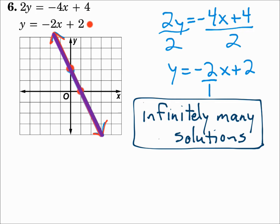When you have a system of equations and you're graphing them, you graph the two lines. If they intersect at one point, there's one solution — consistent independent. If they overlap and form the same line, there are infinitely many solutions — consistent dependent. If the two lines are parallel and don't intersect, there's no solution — inconsistent. When you're solving these systems, if there's one solution, name it by the ordered pair of the point where they intersect.